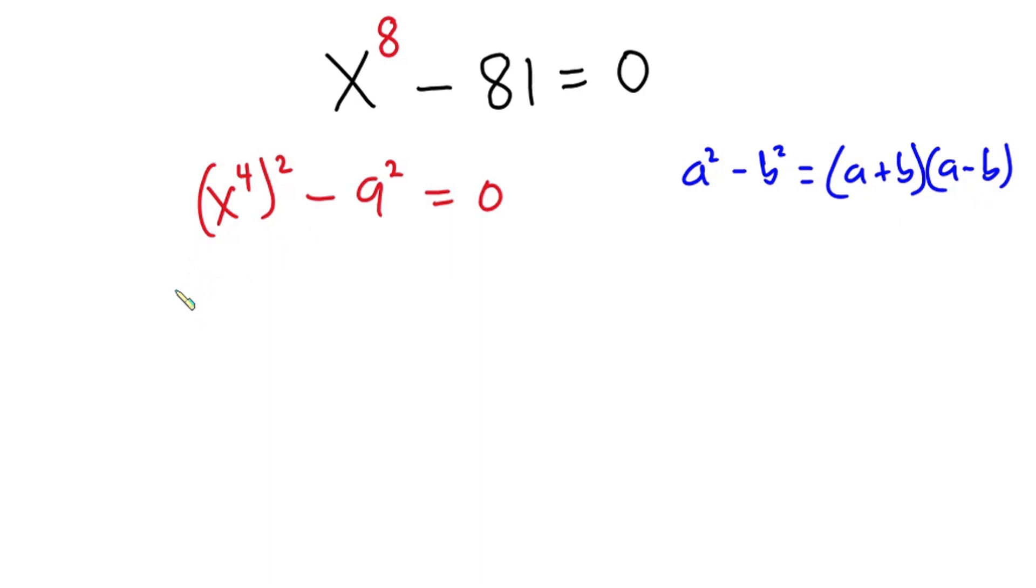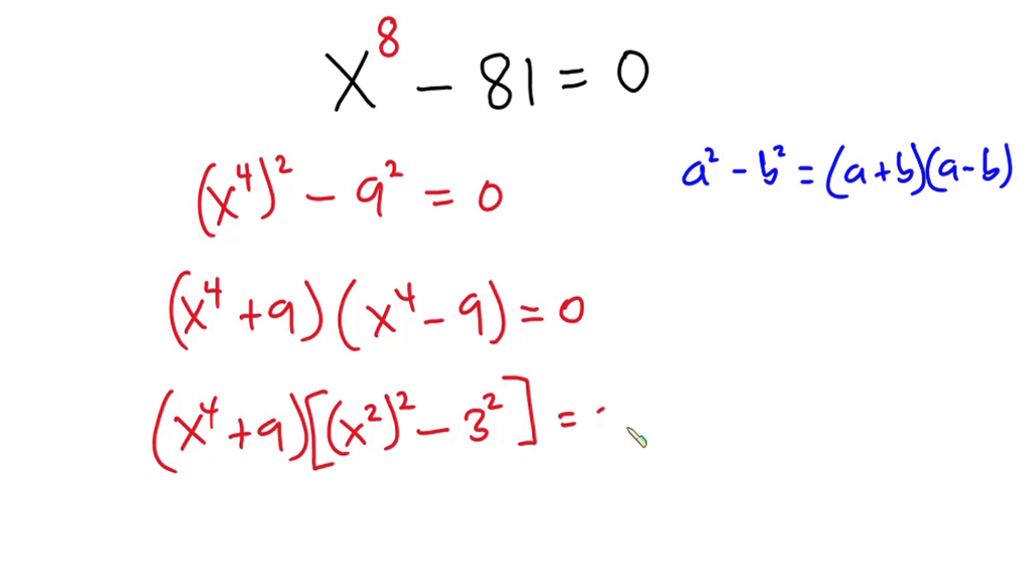So this could also be written as x to the 4th power plus 9 times x to the 4th power minus 9 and this is equal to 0. Now I will keep this factor. So we have x to the 4th power plus 9 then times, now focusing on this one, x to the 4th power could be written as x to the 2nd power to the 2nd power minus and 9 is also the same as 3 to the 2nd power and this is equal to 0.